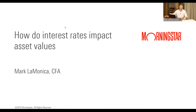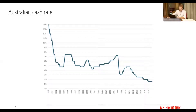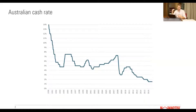So how do interest rates impact asset values? What we have here is a chart going down significantly. We're looking at the Australian cash rate — the interest rate on unsecured overnight loans between the Reserve Bank of Australia and banks. This is really the rate that central banks use to control interest rates. When you hear that interest rates have gone down or up, we're really talking about this rate.